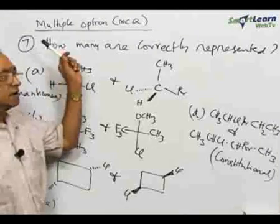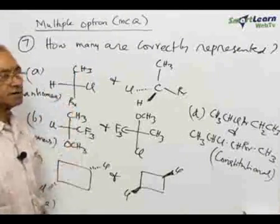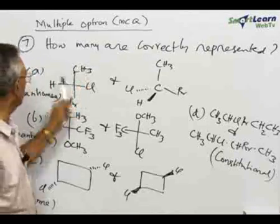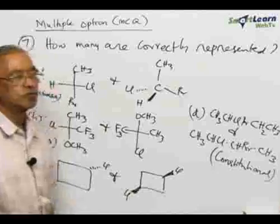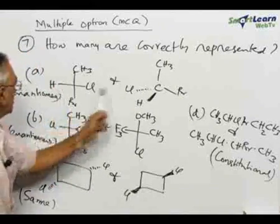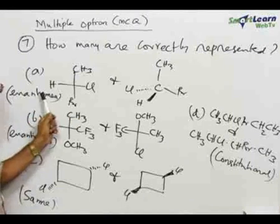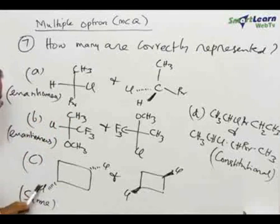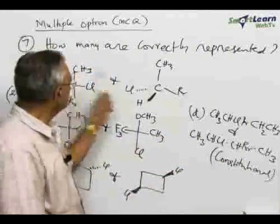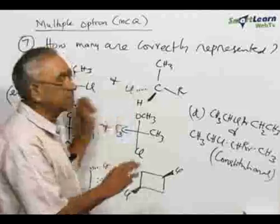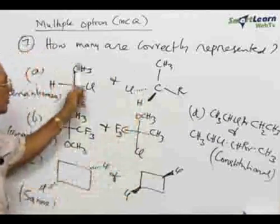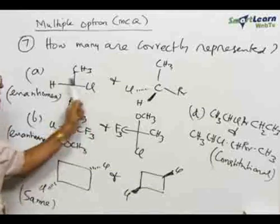Now we are going to the next question, a multiple option multiple choice type of question. Four pairs of compounds are given here — A, B, C, and D — and the relationship between the two compounds in each pair is also indicated in brackets. They are given as enantiomers, two representations of the same compound, or constitutional isomers. The question asks how many of these pairs are correctly represented.